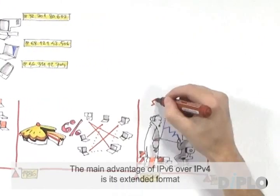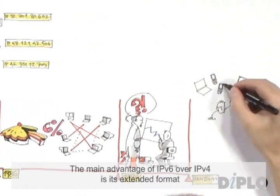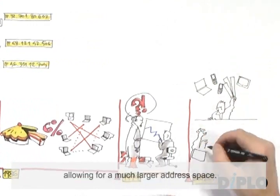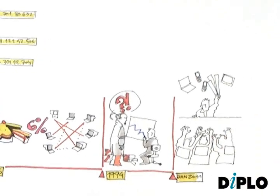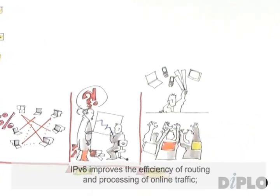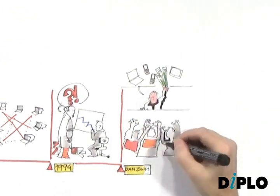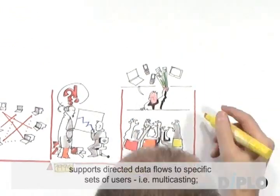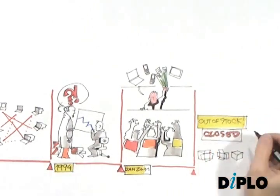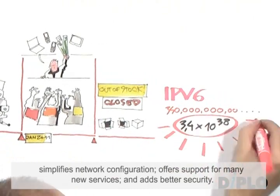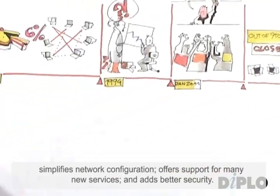The main advantage of IPv6 over IPv4 is its extended format, allowing for a much larger address space. IPv6 improves the efficiency of routing and processing of online traffic, supports directed data flows to specific sets of users (i.e. multicasting), simplifies network configuration, offers support for many new services, and adds better security.